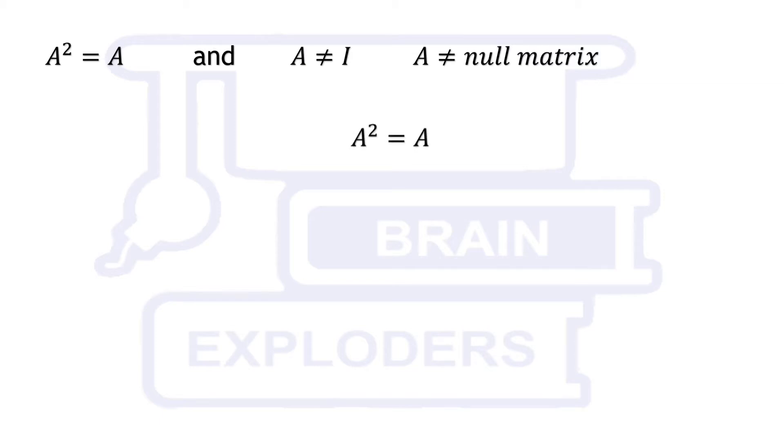A² is equal to A itself, which can be written as A times A is equal to A. Multiply A inverse both sides. A inverse times A is equal to identity matrix, which gives A equals to identity matrix.